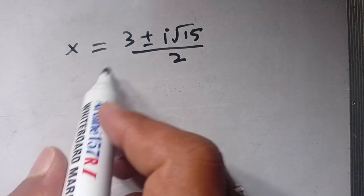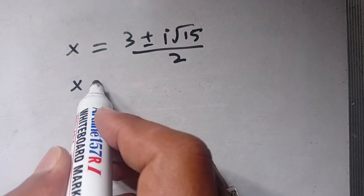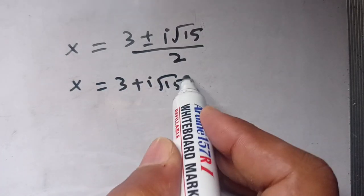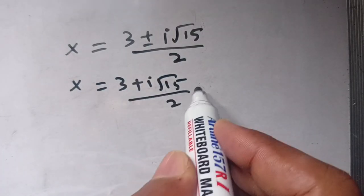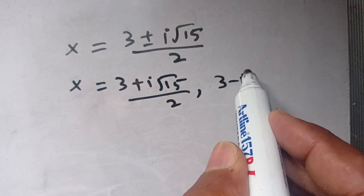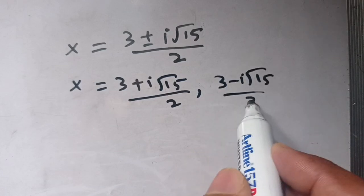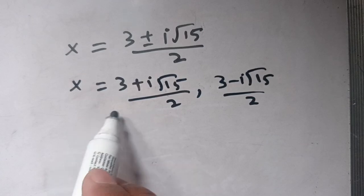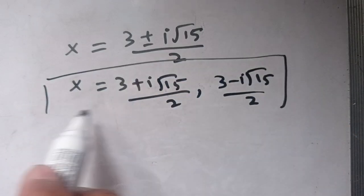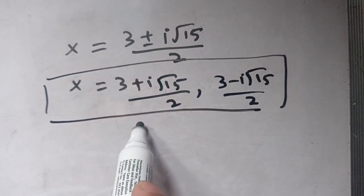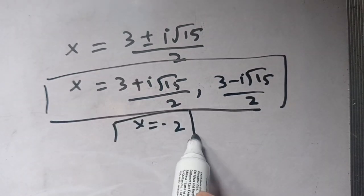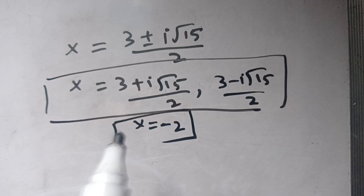So there are two complex values: x equals (3 plus iota√15) divided by 2, and x equals (3 minus iota√15) divided by 2. These are complex-valued roots, while our first value x equals minus 2 is a real value.